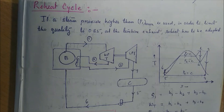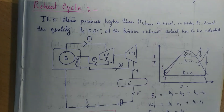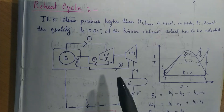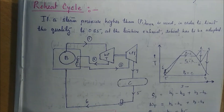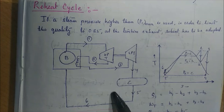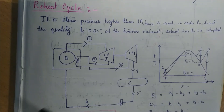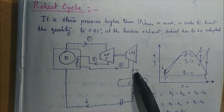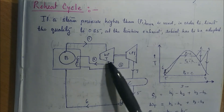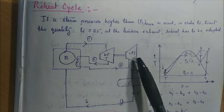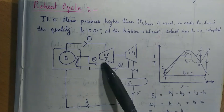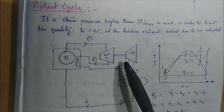Hello students, welcome back to the third part of the VepaPow cycle. Today we are going to discuss the modification of Rankine cycle, such as the Reheat cycle. From this diagram you can easily identify the basic difference between the normal Rankine cycle and this modified Rankine cycle. Here you can see there are two turbines: one is a high pressure turbine and one is a low pressure turbine, instead of one.